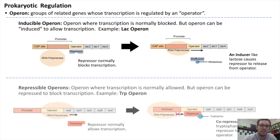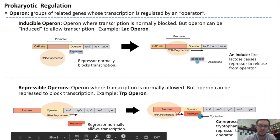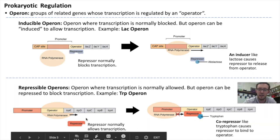You've also seen the opposite of an inducible operon — repressible operons. For example, the trp operon is a repressible operon, and those work in the other direction. In a repressible operon, the repressor protein normally allows transcription to occur, but it can be repressed by the addition of a co-repressor, which can bind to the repressor and cause it to latch onto the operator and block transcription.